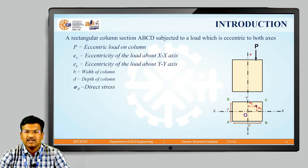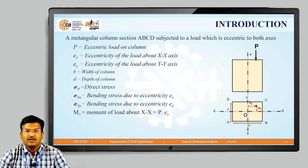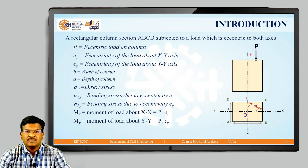From that, we can calculate sigma naught, the direct stress. Since two eccentricities are involved, bending will exist in both axes. Sigma B_x means the bending stress due to eccentricity E_x; similarly, sigma B_y is the bending stress due to eccentricity E_y. Due to eccentricity E_x, the moment of load about X-X axis is M_x, calculated as load multiplied by eccentricity in the x direction. Similarly, in the y direction, M_y is the moment of the load about the Y-Y axis, calculated as P multiplied by E_y.